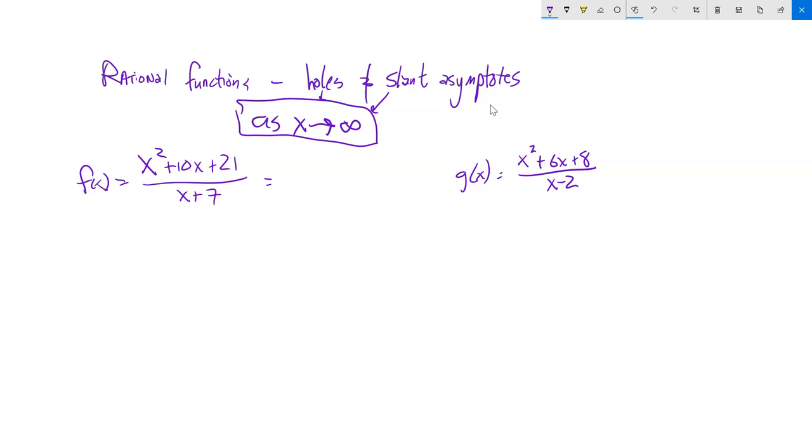I notice as x gets really big, for example on this one, I have x squared over x. Those are the terms that dominate. x squared dominates the numerator, x dominates the denominator because they're going to be the biggest terms. They're going to get so big they dwarf the other terms. So essentially, as x gets really big, it looks like this tends towards x. This tends towards infinity, grows without bound.